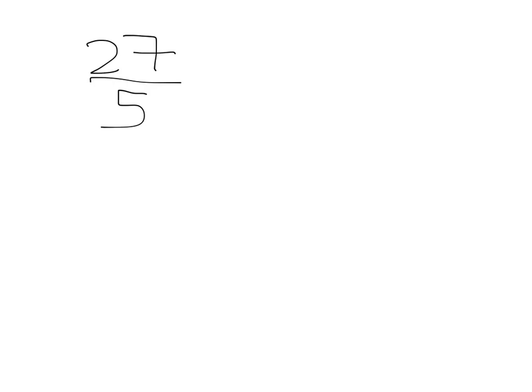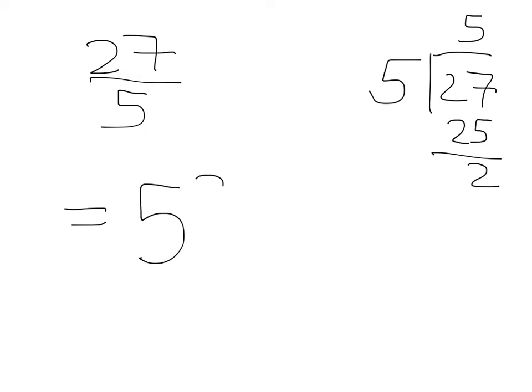OK, did you do as follows? You've got to take 5 and divide it into 27. 5 goes into 27, 5 times, because 5 times 5 is 25. And you have 2 left over, so 27 over 5 is the same as 5 wholes and 2 fifths.